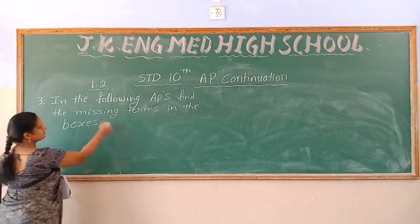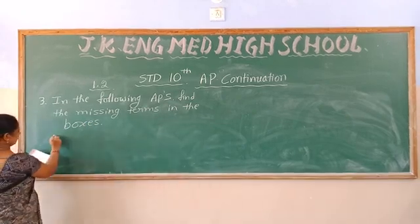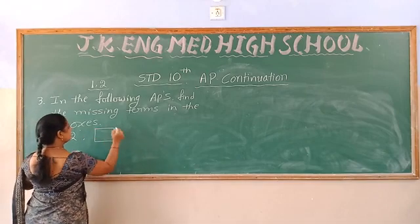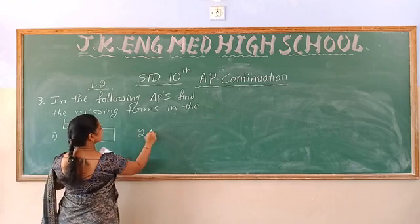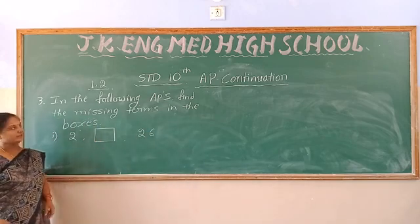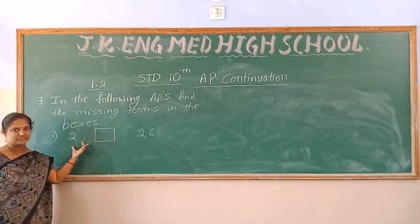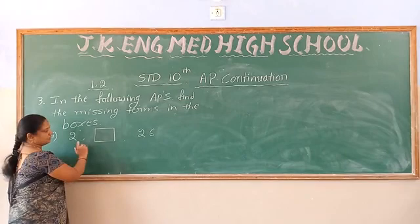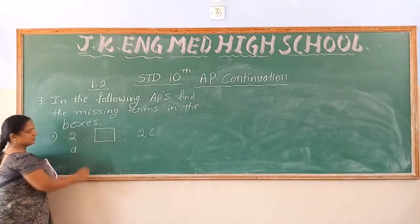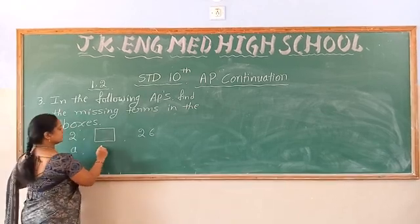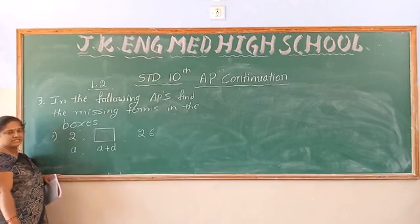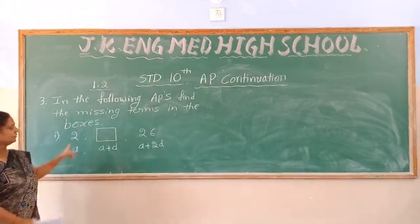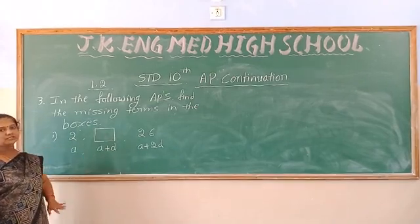First question: the terms given are 2, a box, 26, and another box. The second term is unknown. According to the general formula, we can write the second term as a plus d, and the third term as a plus 2d. We know the first term and third term only; we need to find the second term.